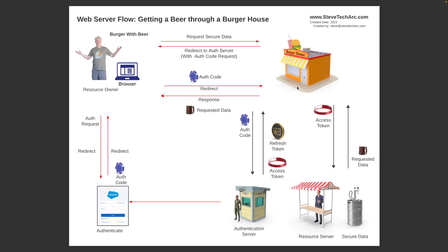My browser will then send that coin — that auth code — back to the burger house, so the burger house has now received my blue coin. What it will do is go to the authentication server, the beer garden guard, and present that blue coin on my behalf. This is on a black secure channel — a direct secure channel between the burger house and the authentication server. What it'll get back can be up to two things: a wrist bracelet to get beer on my behalf (the access token), and what's called a refresh token, which will let it come back later for future access tokens when the wrist bracelets expire. The third party authenticates on the authentication server and gets back an access token and potentially a refresh token.